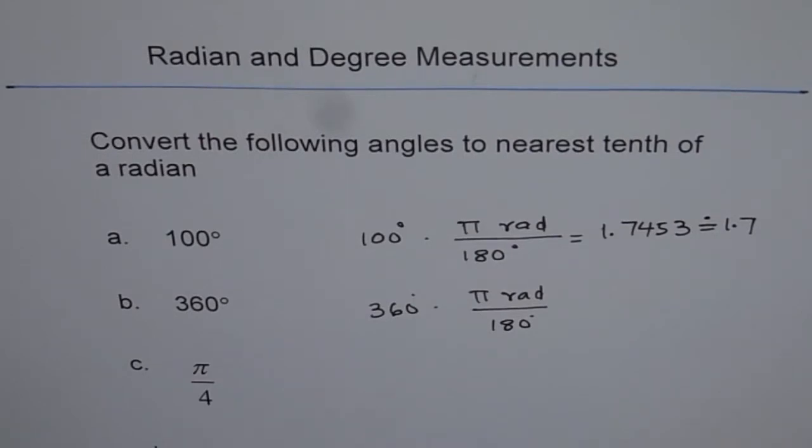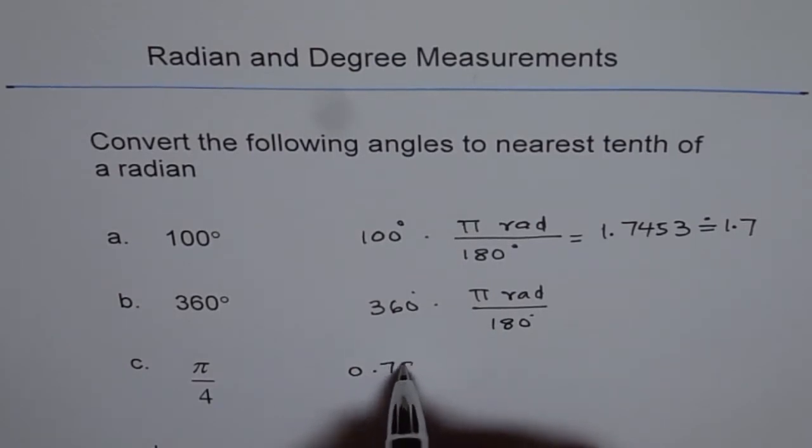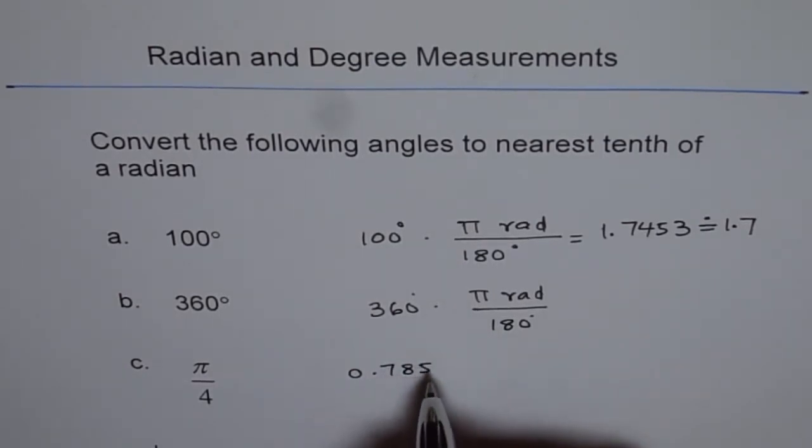Now if it is pi by 4 or pi by 6, just divide pi by 4 for example and then you get 0.78539.